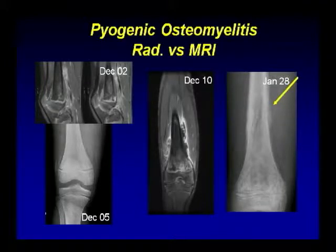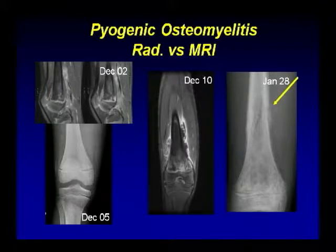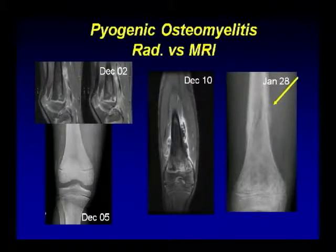By December 10, the MRI shows extensively more signal abnormality and enhancing tissue within the bone marrow, very close to the growth plate, with subperiostal abscess formation — while the radiographs remain negative. Six weeks later, the radiographs finally show periosteal bone formation, which appears somewhat calcified, indicating a subacute phase. At that time the patient was already treated, and a pathologic fracture is visible in the diaphysis.